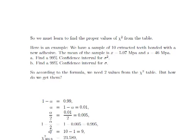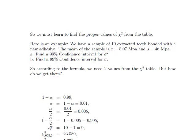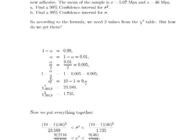So we need two values from the chi-square table. How are we going to do this?